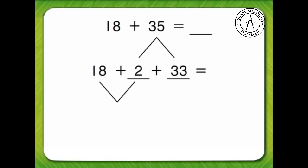To find the sum of 18 and 35, we can break apart one of the addends and solve. Let's break 35 into 2 and 33. Now we can make 18 and 2 into 20. 20 plus 33 equals 53.